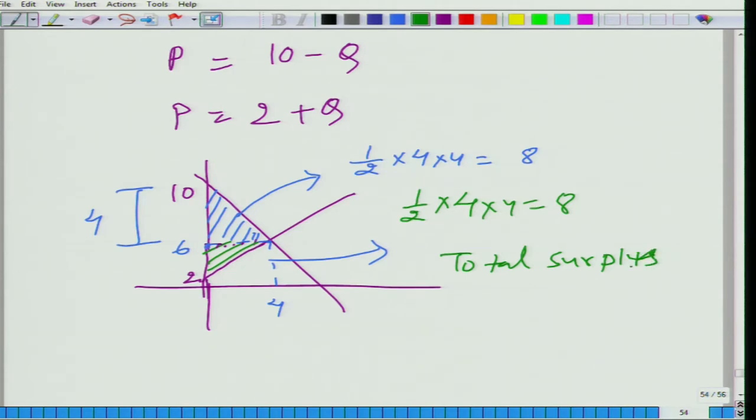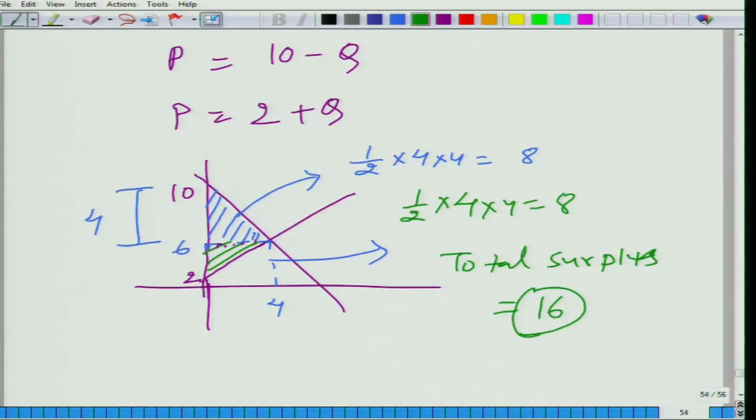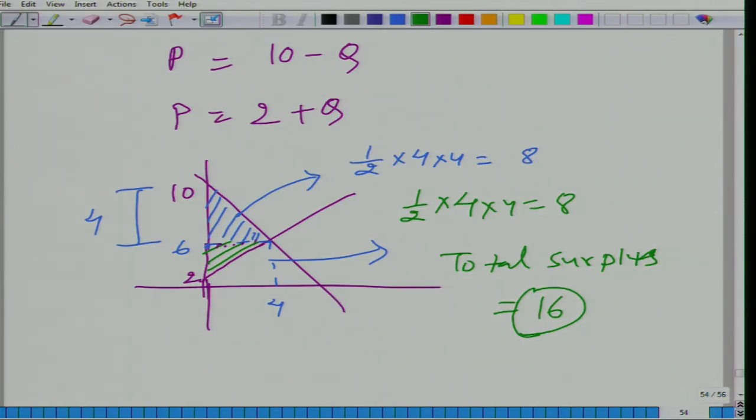So we can say just because this transaction takes place, 16 units of value was generated for the society. Society has gained this 16 units. This total surplus is also in a way total gain for the society.